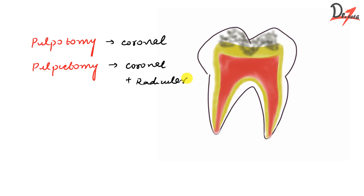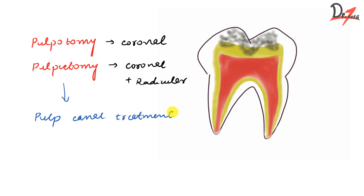In primary teeth, pulpectomy — that is the complete removal of the pulp — is not really possible because we have very complex canals, accessory canals, resorption in the root, and difficulty in determining the anatomical apex. That is why a more appropriate term for pulpectomy would be pulp canal treatment. So pulpotomy is the removal of the coronal portion of the pulp, and pulpectomy is the complete removal of the pulp.